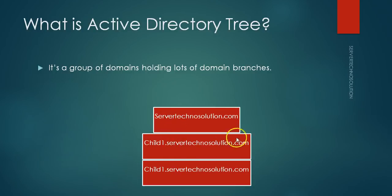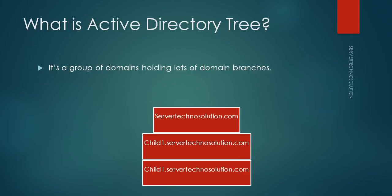If we promote another domain such as 'Server dot com' alongside it, together they form a tree. When we have several trees within a boundary, that is called a forest. It's not necessary to have lots of domains — there can be only one domain and we still call it a forest. The forest name will always be the first domain promoted; in our case it is 'Server Techno Solution dot com.'